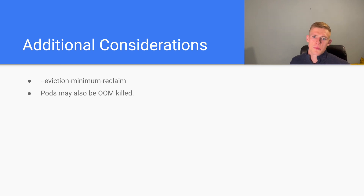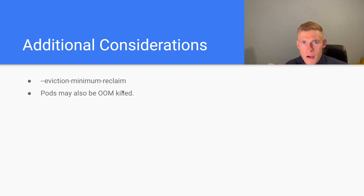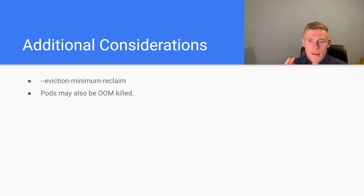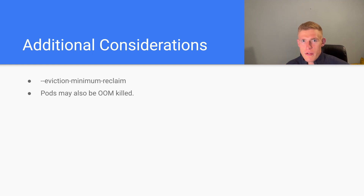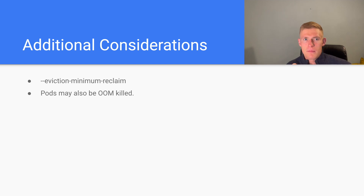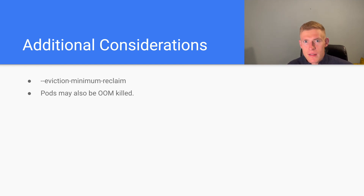Pods may also be OOM-killed. If memory utilization reaches a point where the Linux kernel steps in and kills a pod or process due to out-of-memory conditions, that may happen before eviction actually takes place — especially if eviction thresholds are set broadly or pods are given more grace time before shutdown. The node's own limitations may kill processes running our pods before kubelet-driven eviction occurs.